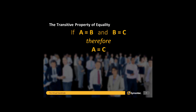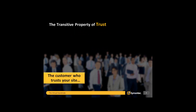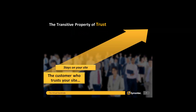I want to introduce something called the transitive property of trust. It's based on the transitive property of equality that we all learned in high school: if A equals B and B equals C, then A equals C. The transitive property of trust works like this: the customer who trusts your site is the customer who stays on your site.